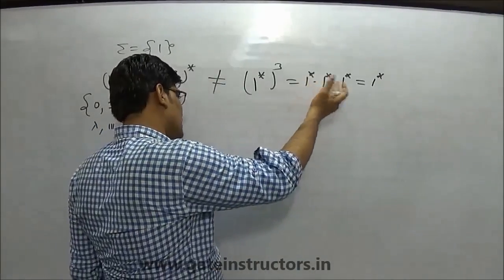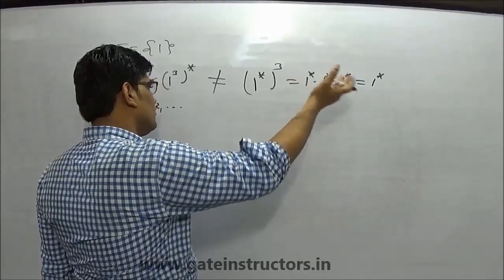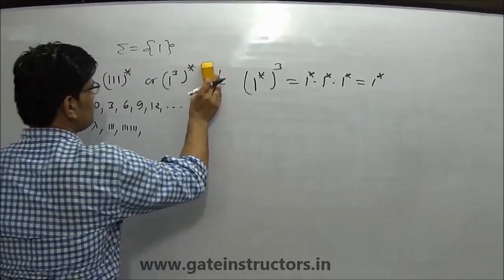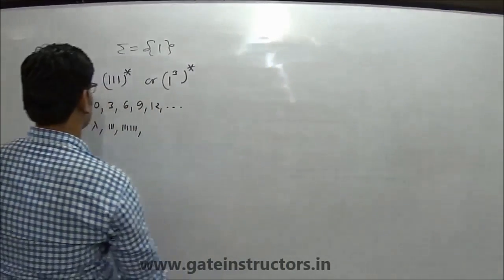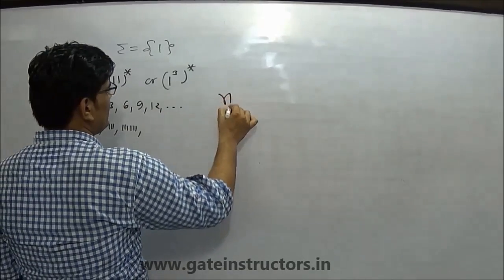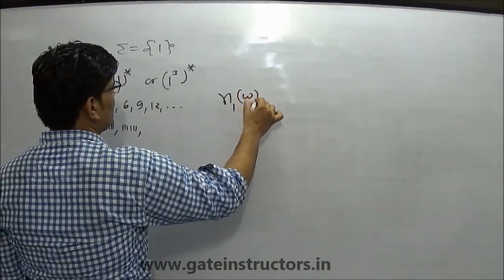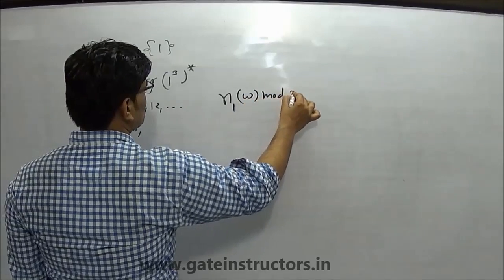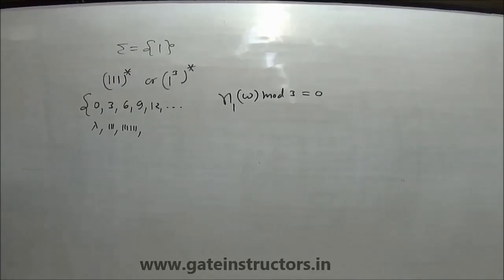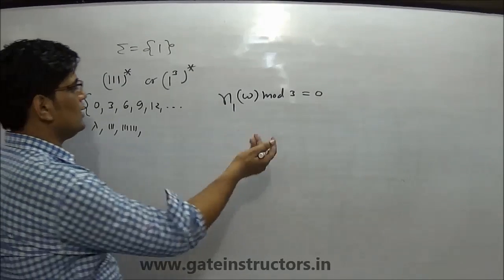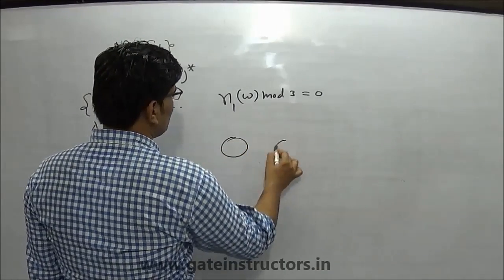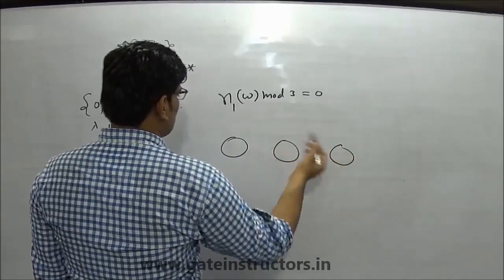Here we will also see 0, 1, 2, 3, 4, 5 — these are not multiples of three and are not equal. So we can write this type of string formally: the number of 1s in w mod 3 is equal to 0.